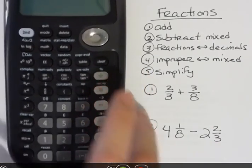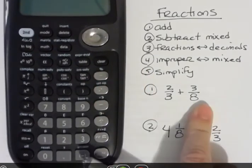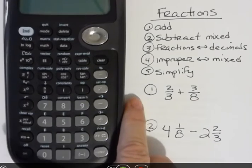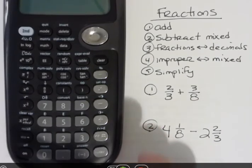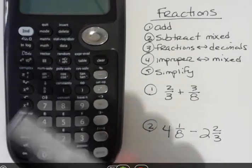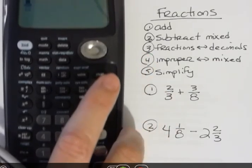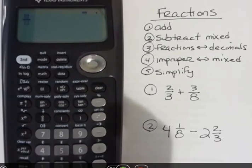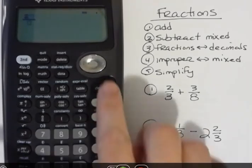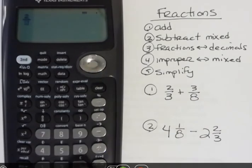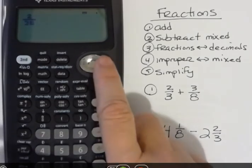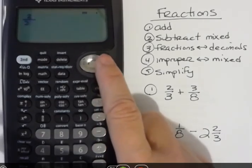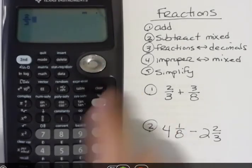When I add something like two thirds plus three eighths, I'm going to use the fraction button. It's the button above the number seven right here. So I'm going to hit that button, and when I do, it gives me a fraction on my screen. Then I can enter the fraction, the numerator. To get to the denominator, I'm going to hit the down arrow and enter that denominator.